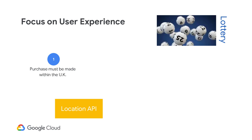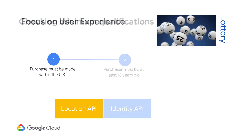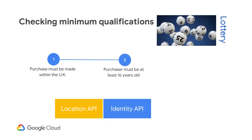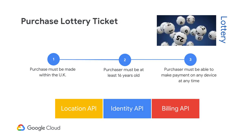Luckily, most telcos have a location API available for use. Next, the lottery requires the purchaser to be at least 16 years of age. Therefore, the application must be able to identify the player and look up the player's profile to determine if the minimum age qualifications are met. This can be done through an identity API. Once the minimum qualifications have been met and the player is ready to purchase, the application must provide the ability to pay. The billing API allows the application to accept payment and the player to complete the purchase of lottery tickets.